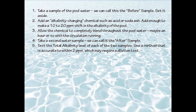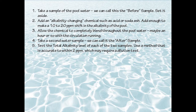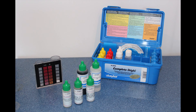Then take an alkalinity reading of those two different samples. For this to be of sufficient accuracy, you need to use a test method that is accurate within a couple parts per million. The standard poolside alkalinity test kit is 10 parts per million per drop, so we need to get it down to one or two. Here's how you do it — we're going to have to change the alkalinity test just a little bit.